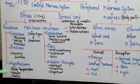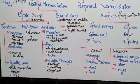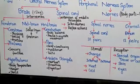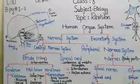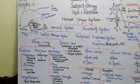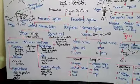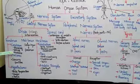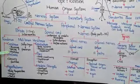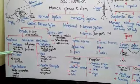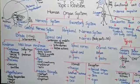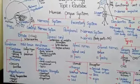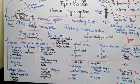The forebrain is divided into three parts. First is the cerebrum, which is the topmost and largest part of the brain. The cerebrum is divided into two portions: the right and left cerebral hemispheres. The cerebrum controls all your voluntary actions, your feelings, emotions, sight, hearing, perceptions, and speech.